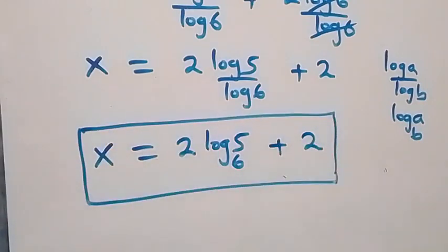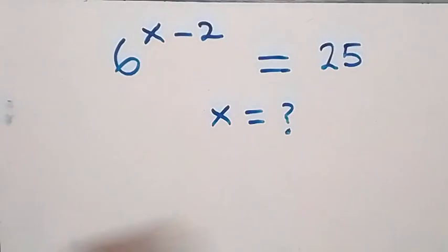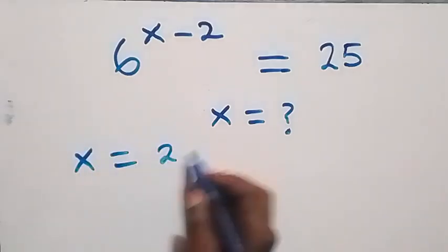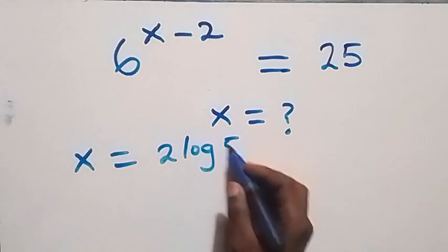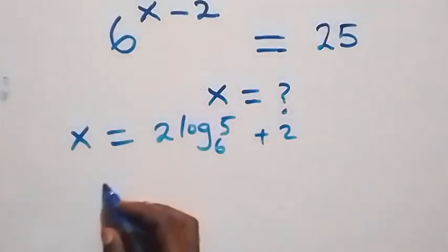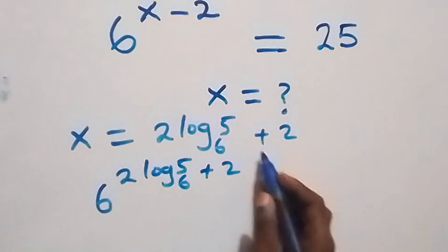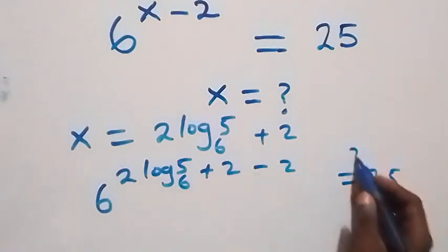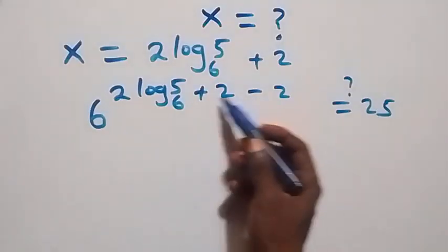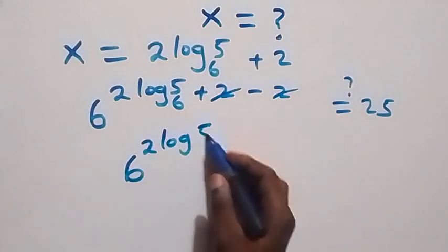Let's verify this solution by substituting x equals 2 log 5 to base 6 plus 2 back into the original equation. The equation becomes 6 raised to power 2 log 5 to base 6 plus 2, minus 2, equals 25. The plus 2 and minus 2 cancel, leaving 6 raised to power 2 log 5 to base 6.